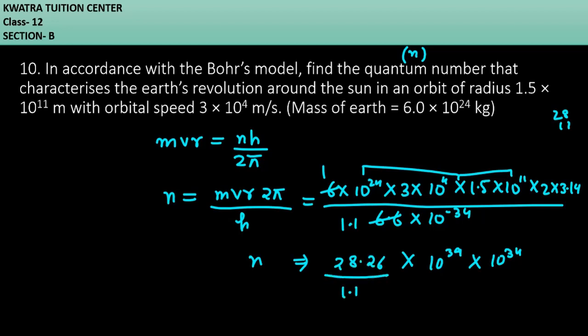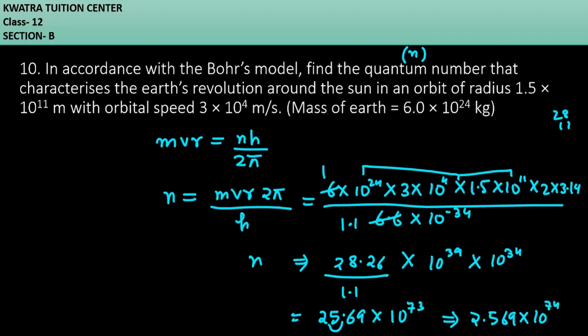Dividing gives 25.69 into 10 to the power of 39 plus 34, which gives 10 to the power of 74. If you convert it to standard form, it will give you 2.569 × 10^74. So yes, this is the quantum number that categorizes the earth's revolution around the sun. This is your answer.